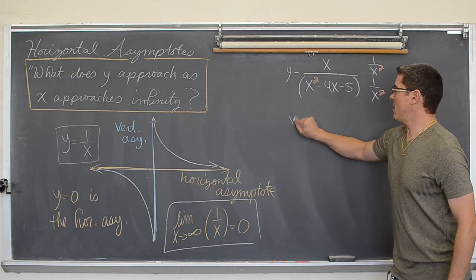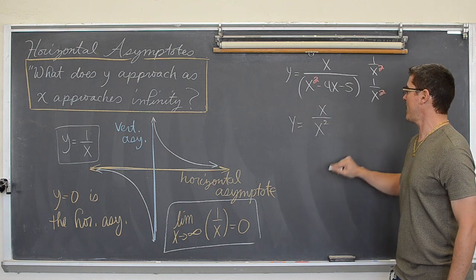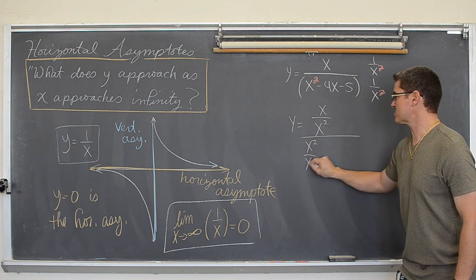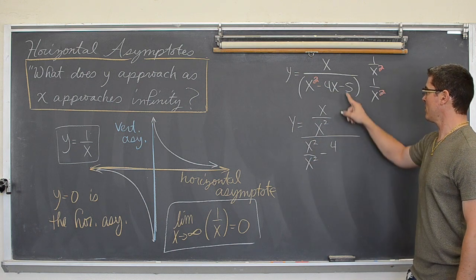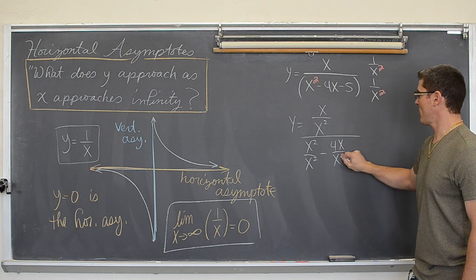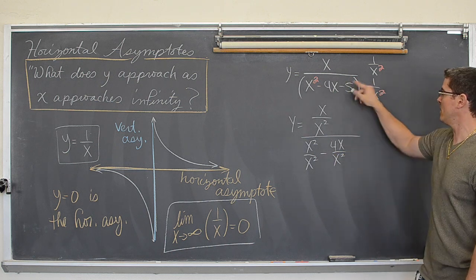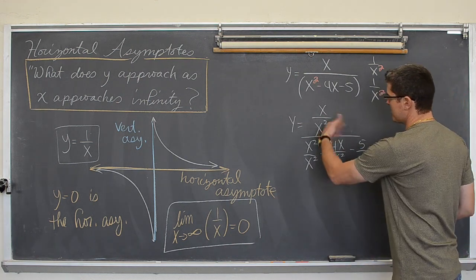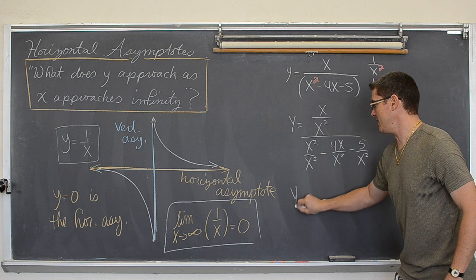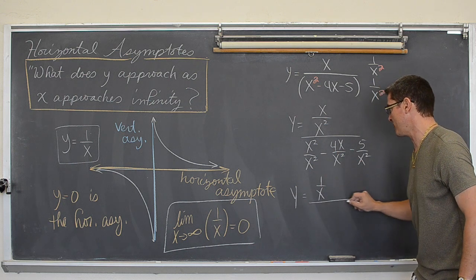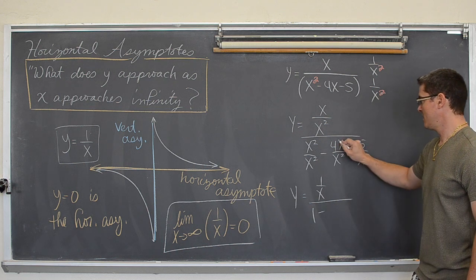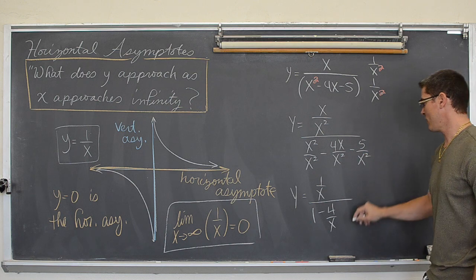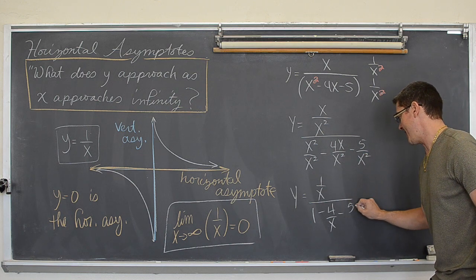Putting this through, I get y equals x over x squared, which becomes: x squared over x squared minus 4x over x squared minus 5 over x squared. Distributing this 1 over x squared all the way through, I simplify and get y equals 1 over x, all over 1 minus 4 over x minus 5 over x squared.